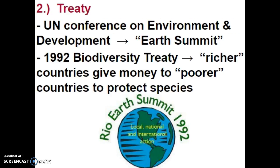We can also look at treaties developed to protect biodiversity. The United Nations had a conference on environment and development called the Earth Summit in the early 1990s, resulting in the 1992 Biodiversity Treaty. Like any international agreement, it is very hard to police, and it is more of an international understanding that richer countries will give money to poorer countries to help protect their species. For example, the United States gives money to places in India, China, and Africa to help police illegal poaching and the illegal trade of ivory and furs from animals on the endangered species list.